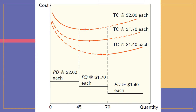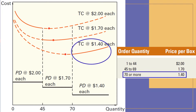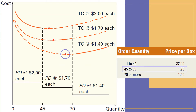Even though each curve has a minimum, those points are not necessarily feasible. For example, the minimum point for the $1.40 curve appears to be about 65 units; however, the price list indicates that an order size of 65 boxes will involve a unit price of $1.70. The actual total cost curve is denoted by the solid lines — only those price-quantity combinations are feasible. The objective of the quantity discount model is to identify the order quantity that will represent the lowest total cost for the entire set of curves.